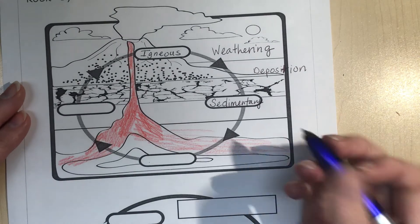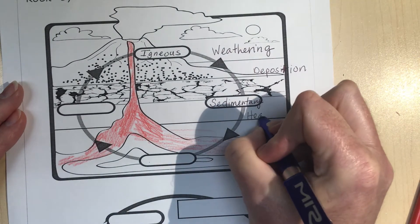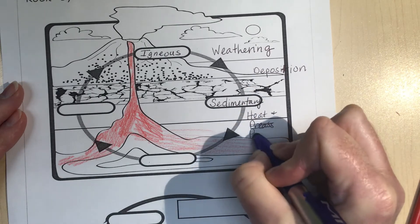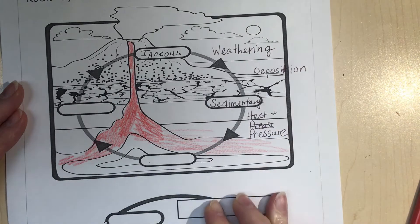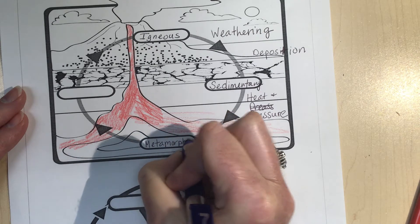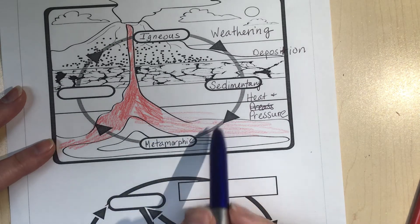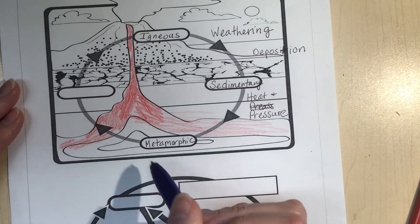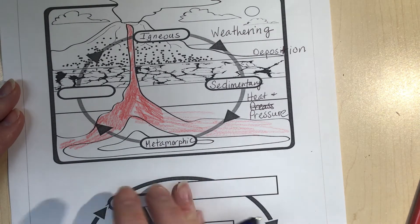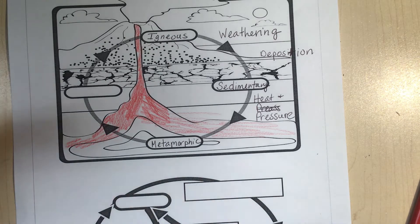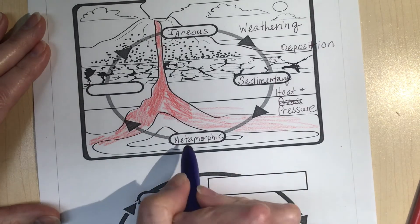And then we have heat and pressure. Pressure can turn sedimentary rock into metamorphic. Now this kind of looks like it's underground, but it doesn't have to be underground. Most of the time it is because of the pressure underground. So yeah, this is actually a more realistic picture because some of these rocks when they're under the surface, they do get that heat and pressure more, and so they can actually melt.